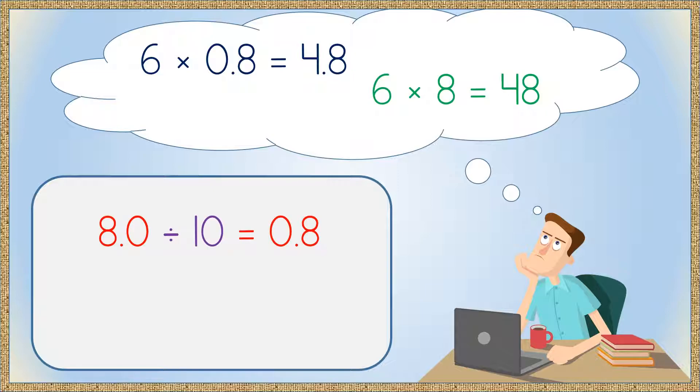8, or 8 decimal point 0, divided by 10 equals 8 tenths. So, dividing by 10 decreased the value by 10. Notice how the decimal point shifted one place to the left: 8.0 to 0.8.